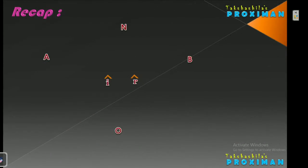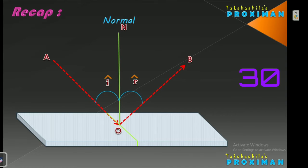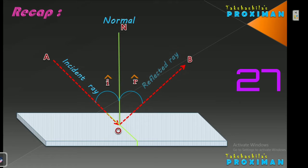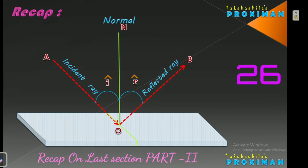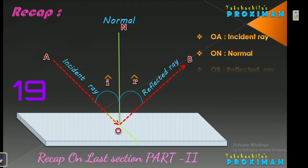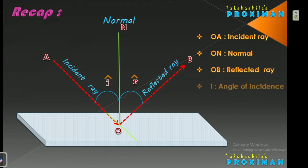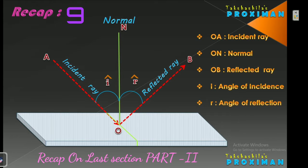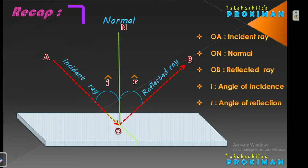Let us have a quick recap on Part 2 of the Ray Optics lesson. We have OA as the Incident Ray, ON as the Normal, and OB as the Reflected Ray. The angle made by the Incident Ray with the Normal is called the Angle of Incidence, and the angle made by the Reflected Ray with the Normal is called the Angle of Reflection. This was the Laws concept.